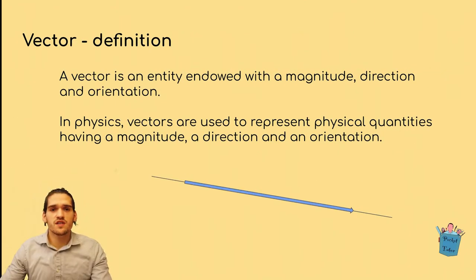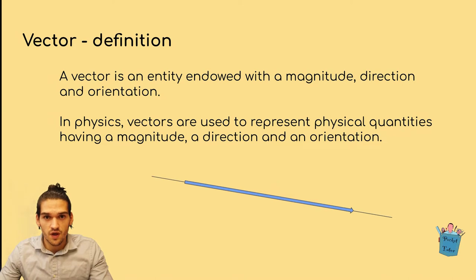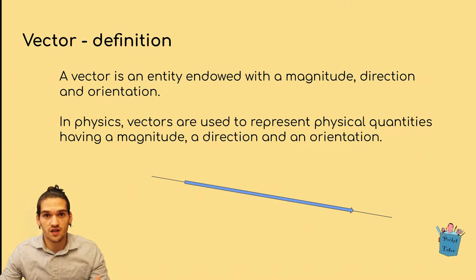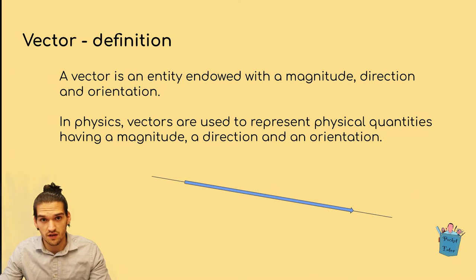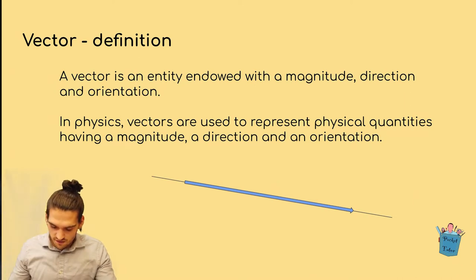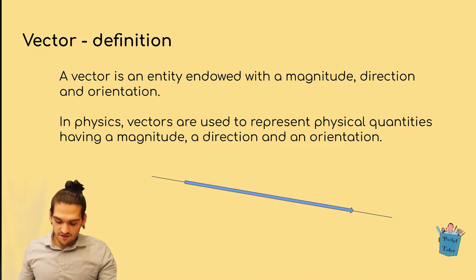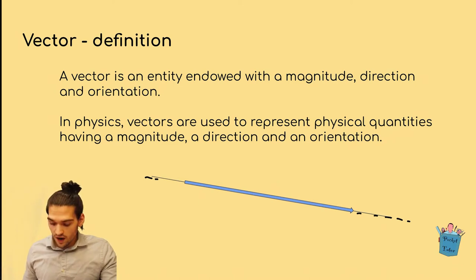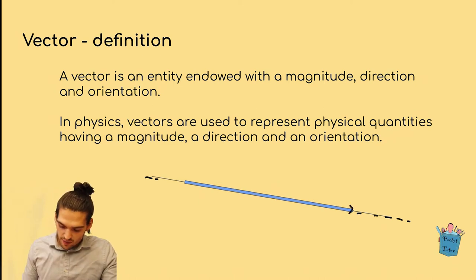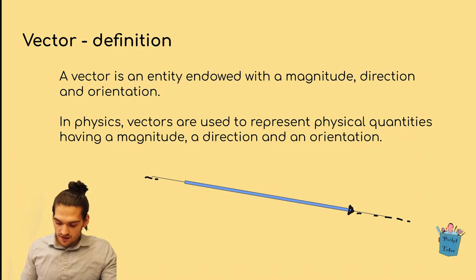First of all, how is a vector defined? A vector is a mathematical object — an entity that has a direction, an orientation, and a magnitude. In physics, vectors are used to represent physical quantities having a direction, an orientation, and a magnitude. As we can see in this first picture, this is a vector. The direction is given by the line that defines its direction in space, while the orientation is given by an arrowhead.